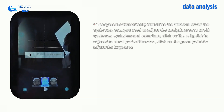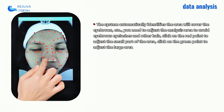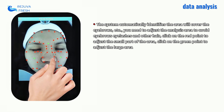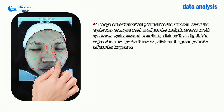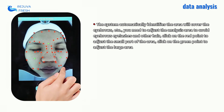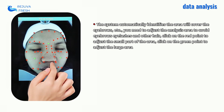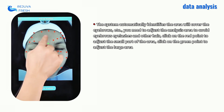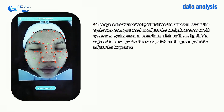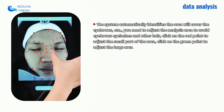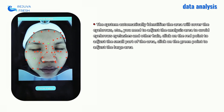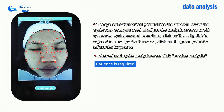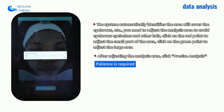The system automatically identifies the analysis area, which may cover the eyebrows. You need to adjust the analysis area to avoid eyebrows, eyelashes, and other hair. Click the red point to adjust a small part of the area; click the green point to select and adjust a larger area. After adjusting the analysis area, click Precise Analysis.